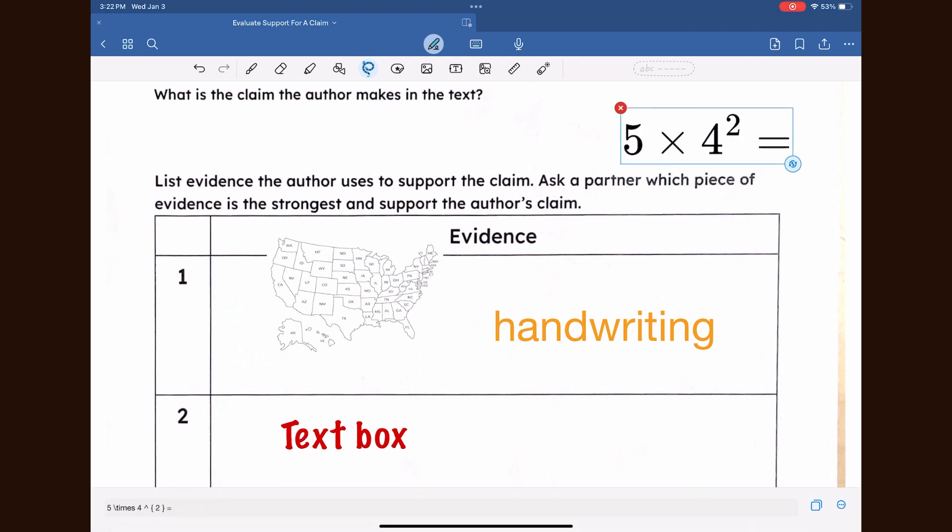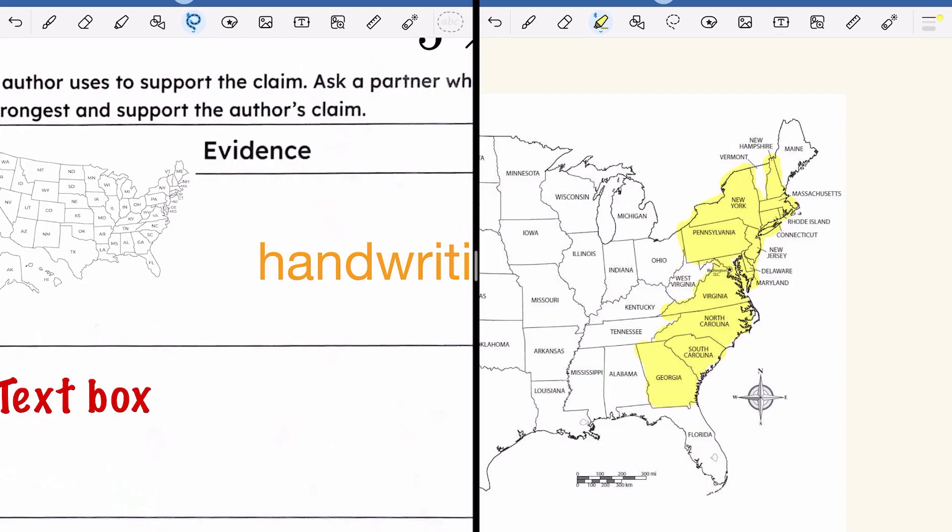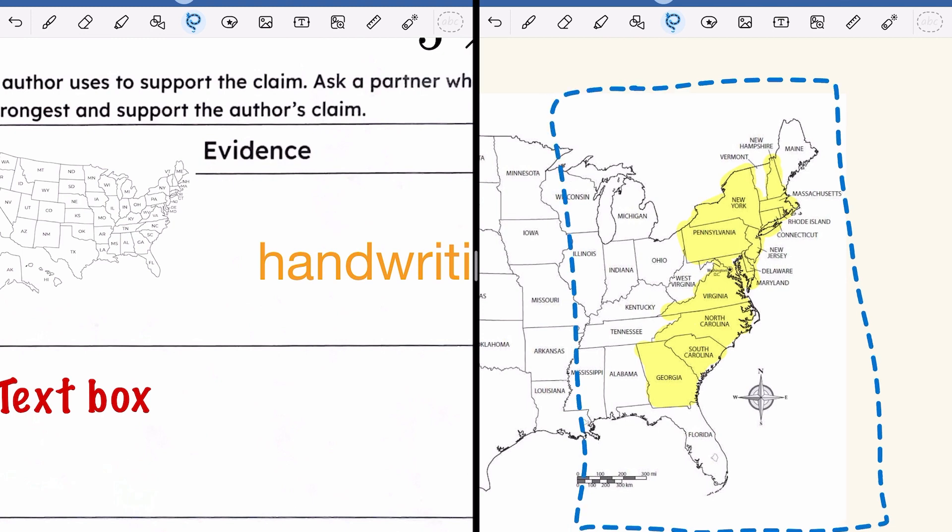To take a screenshot, select the lasso tool and draw a box around the item. Tap on the box and then select take screenshot.